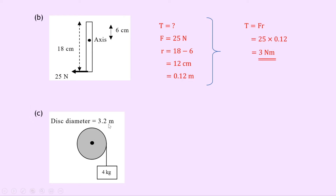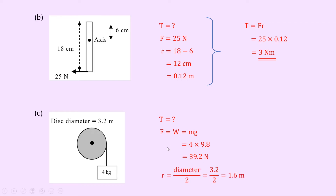For part C, we have a disc of diameter 3.2 metres with a mass of 4 kilograms hanging from it, causing it to rotate. We need the radius, not the diameter, as that is the distance from the axis of rotation. The force is due to the weight: F equals M times G, so 4 times 9.8 equals 39.2 newtons. The radius R is 3.2 divided by 2, giving 1.6 metres. So T equals 39.2 times 1.6, which gives 62.7 newton metres.